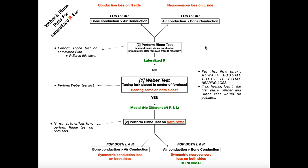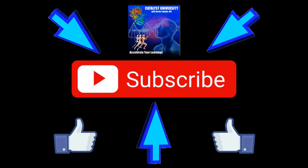For the Rinne and Weber tests, you can get much more complicated combinations, and maybe a future video will cover that. But this is the major content you need to understand — if you can follow this flowchart, you'll get the right answer every time. Hopefully this video was easy to follow and you now understand how to analyze the results of the Weber and Rinne tests. Please make sure to like and subscribe for future videos and notifications. Thank you.